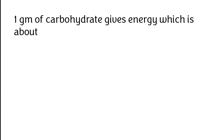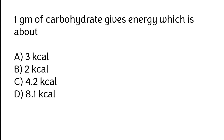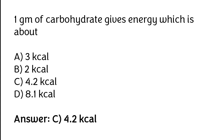1 gram of carbohydrate gives energy which is about: 3 kilocalorie, 2 kilocalorie, 4.2 kilocalorie, or 8.1 kilocalorie. The correct answer is option C. 1 gram of carbohydrate gives energy which is about 4.2 kilocalories.